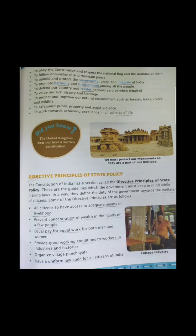What are the main duties of the government towards the welfare of citizens under directive principles? First, all citizens must have access to adequate means of livelihood — meaning every citizen living in India must have their basic necessities such as food, clothing, and shelter. Second, prevent concentration of wealth in the hands of very few people — wealth must be distributed broadly and not concentrated in just a few hands.